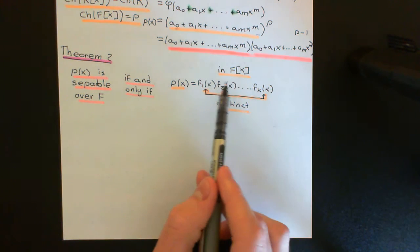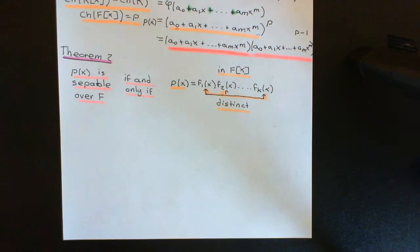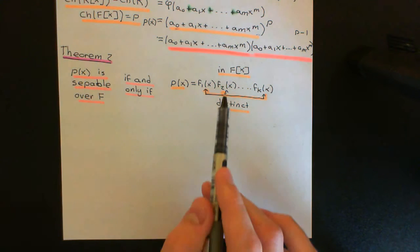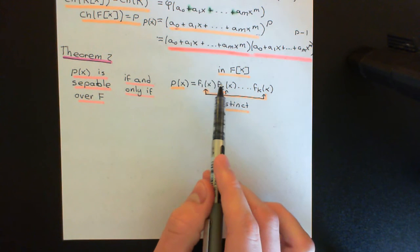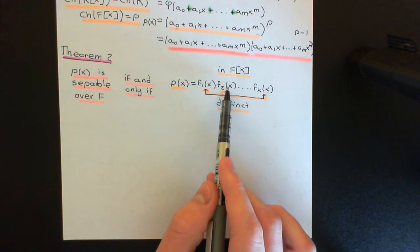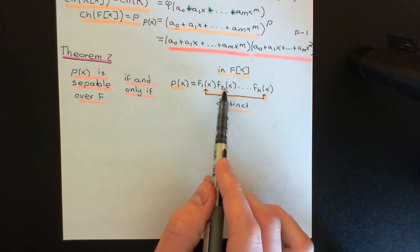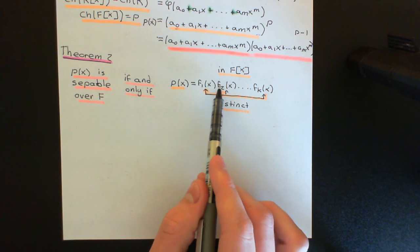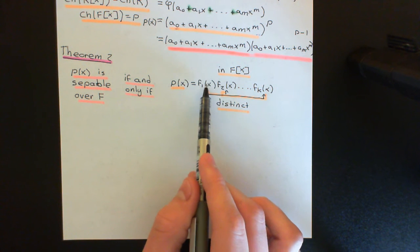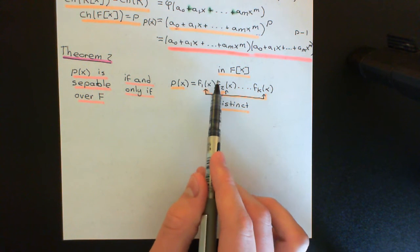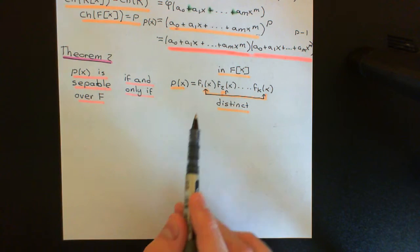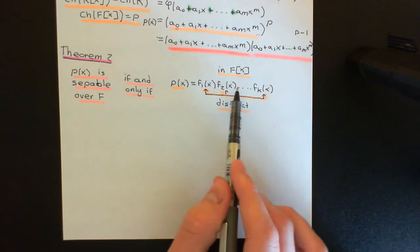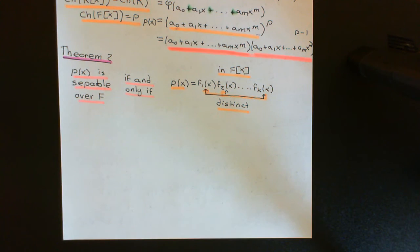The condition requires that no two of the irreducibles are associates of one another. It cannot be the case, for instance, that F₁(X) and F₂(X) are associates — i.e. that F₂(X) is some unit times F₁(X) — because then you could pull that unit out and write F₁(X) squared. Each of the irreducibles must be distinct.